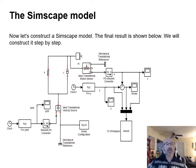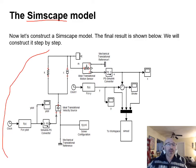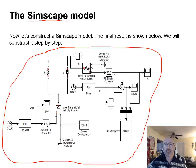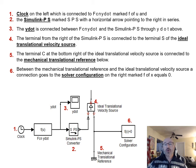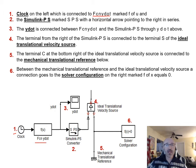Now let's look at the Simscape model. Element number one is a clock on the left connected to function y-dot (f(u)). Element two is a Simulink-PS converter (SPS) connected in series with a horizontal arrow pointing right.